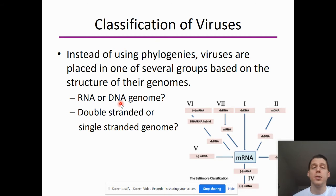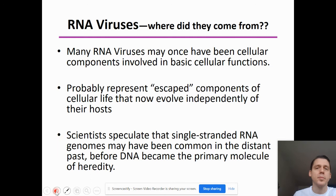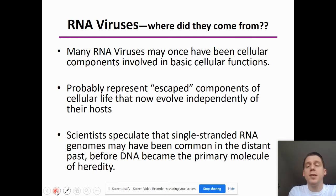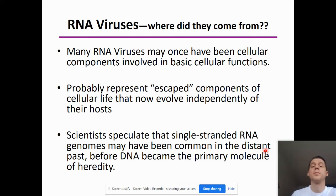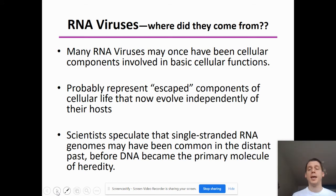RNA viruses may have been cellular components involved in basic cellular functions that escaped at some point in the past. Scientists speculate that single-stranded RNA genomes may have been common in the distant past — long before DNA became the primary molecule of heredity. These RNA viruses might have escaped long ago and then evolved since then.